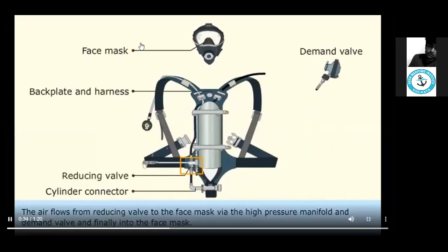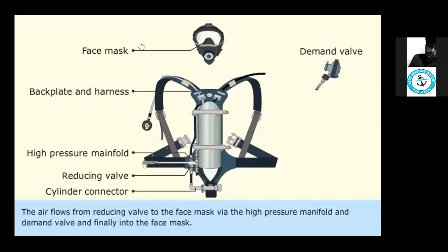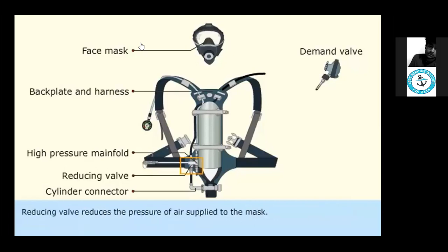The air flows from the reducing valve to the face mask via the high-pressure manifold and demand valve and finally into the face mask. The reducing valve reduces the pressure of air supplied to the mask.